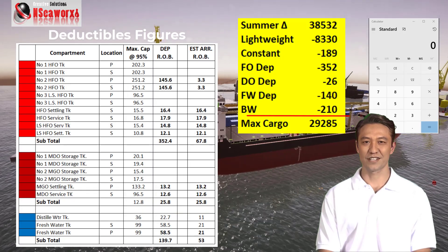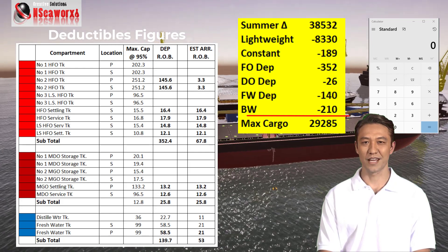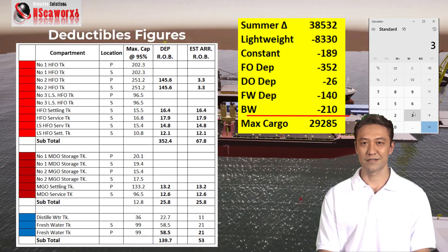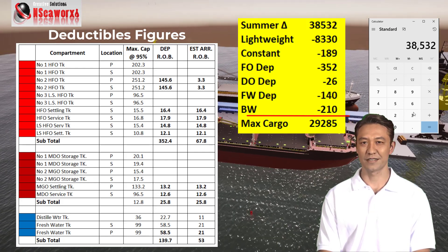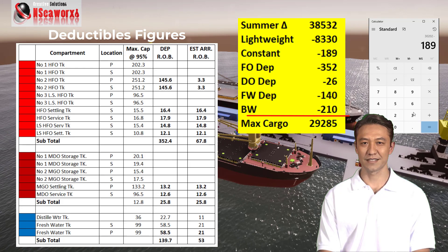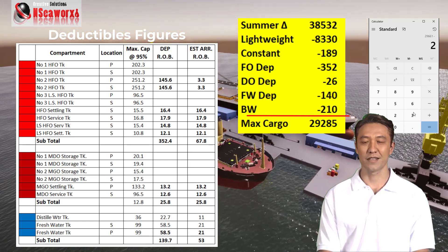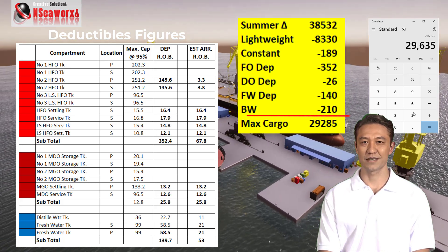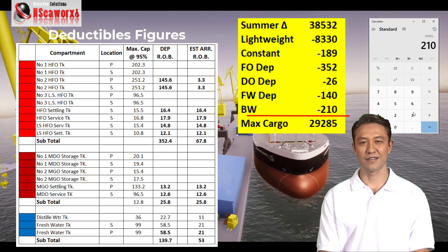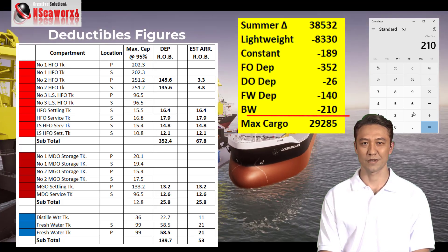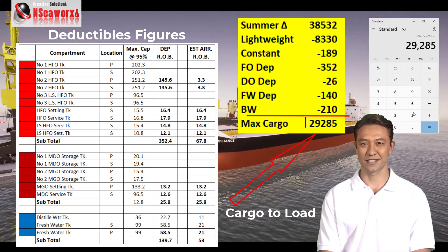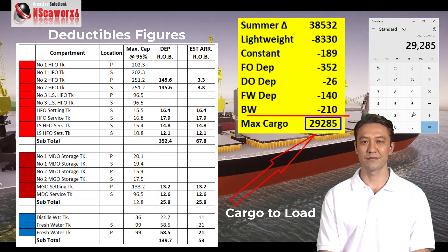To further proceed with this demonstration of calculation, we have the deductible figures, as well as estimated bunker figures from the chief engineer upon departure. We have our summer displacement of 38,532 metric tons, minus the lightship displacement of 8,330 metric tons, minus constants of 189 metric tons, minus bunkers (fuel oil) of 352 metric tons and diesel oil, minus fresh water of 180 metric tons, and minus ballast water of 210 metric tons — also referred to as dead ballast, being unpumpable ballast water. In this case, we arrive at a total of 29,285 metric tons of maximum cargo that can be loaded on this vessel.